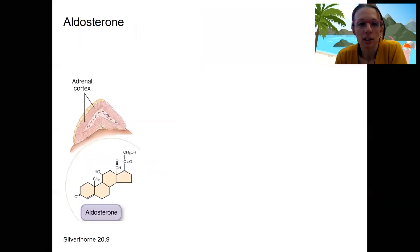So here is aldosterone, a steroid hormone produced by the adrenal cortex. Hormones are going to travel in the bloodstream, and it's going to be stimulated, one, by low blood pressure.